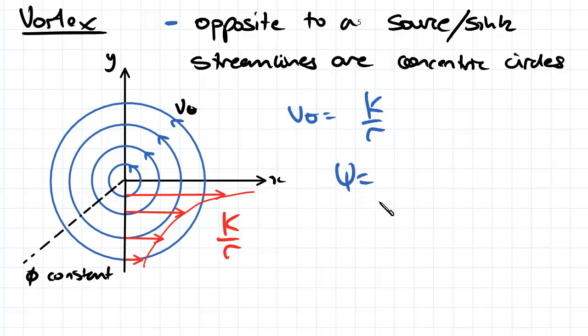So the key equations that you need to know is that the streamline is equal to negative K ln R and that the velocity potential equation is equal to K times theta. So there's our two equations for vortex flow.